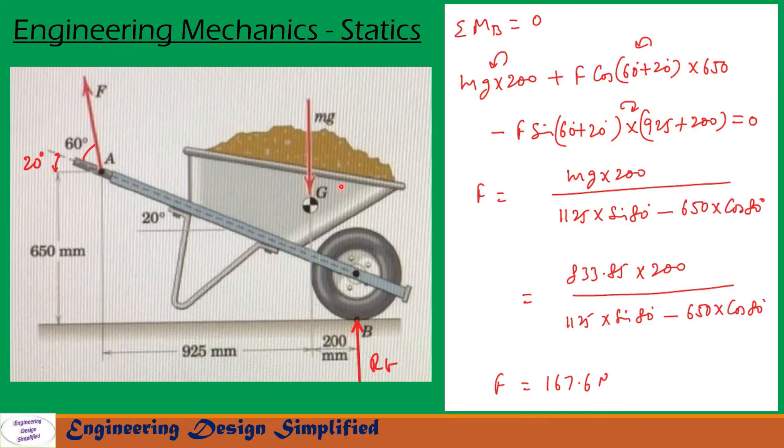Now let us take moments due to these two forces about point B. The reaction at B won't create any moment about B. So the moment about B is zero, that is given in the problem. So ΣMB = 0. Now the moment due to MG about B can be written as MG × 200, that is this distance is 200 and the weight is M × G.